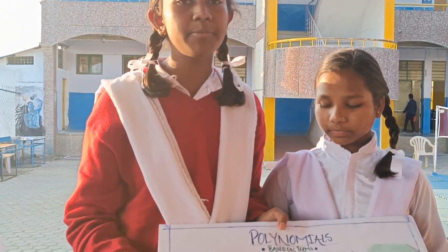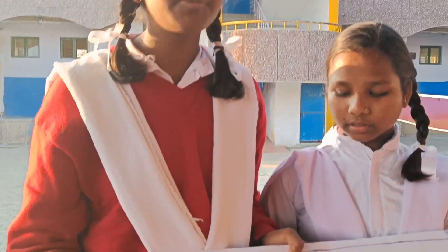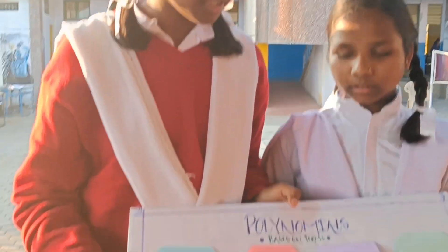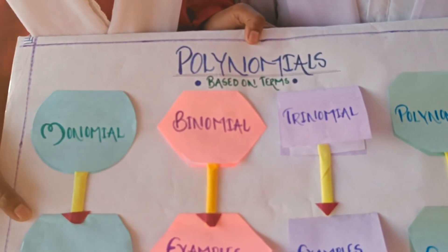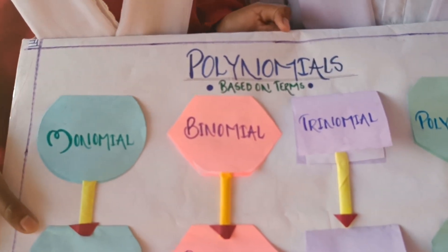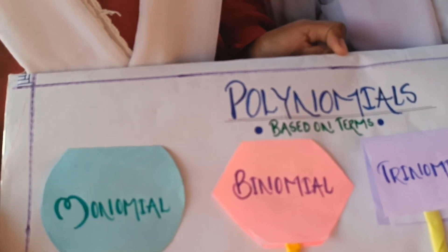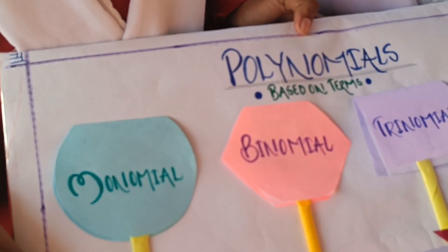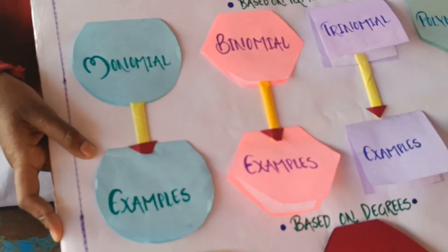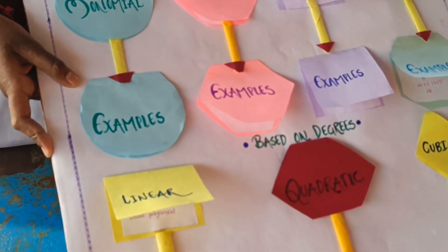Good afternoon, ma'am. We are going to represent polynomials. My name is Ashutha. My name is Kiko. I am a master of polynomials. Polynomials is the combination of variables and constants with the help of basic operations, that is plus, minus, multiply, and division.